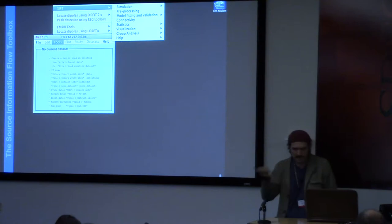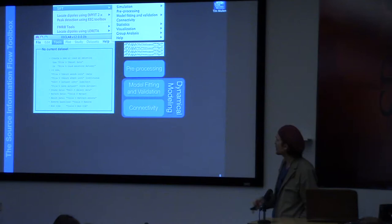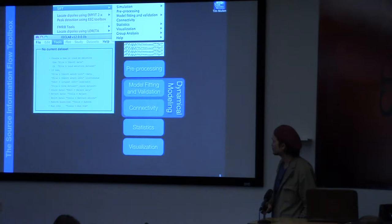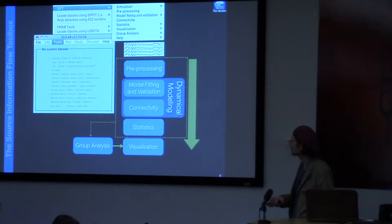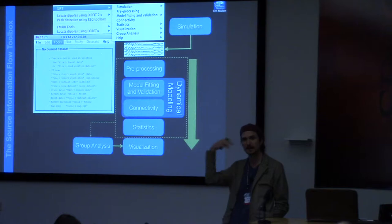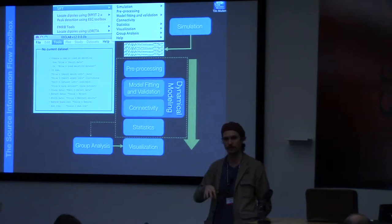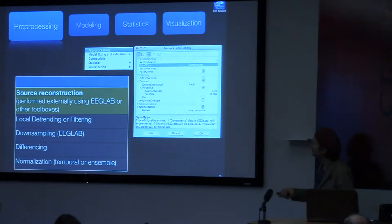SIFT is a modular toolbox with five or six modules: pre-processing, dynamical modeling (model fitting, validation, and connectivity), statistics on model outputs, and visualization. There are also routines for group analysis, hierarchical Bayesian modeling, and a simulation module that lets you build realistic dynamical models of neural activity, project them to the scalp, and generate simulated EEG data under a wide array of network assumptions — useful for validating different modeling approaches.